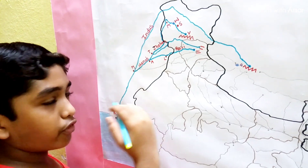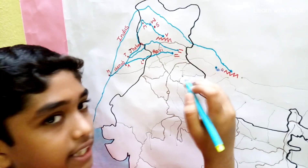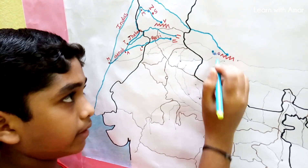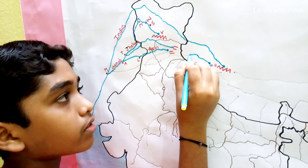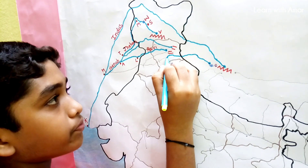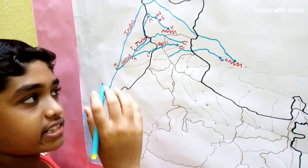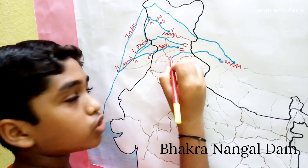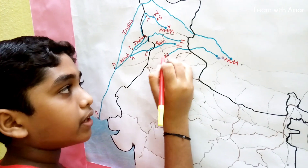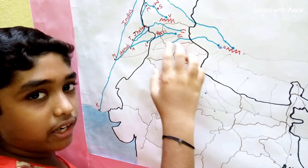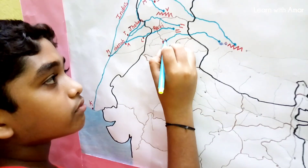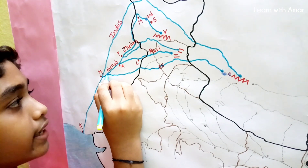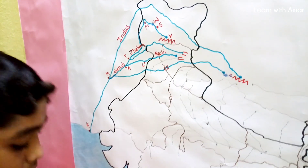The longest left bank tributary of the Indus is Sutlej. Its source is near Mansarovar and Rakshastal lakes in the Kailash range, Tibet. It flows through Tibet and enters India in Himachal Pradesh. Here we find the largest dam of India — the Bhakra Nangal Dam. Bhakra Dam is located in Himachal Pradesh and Nangal Dam in Punjab. It then enters Pakistan and at last joins with Chenab, then with Indus at Mithankot.